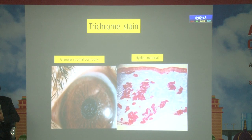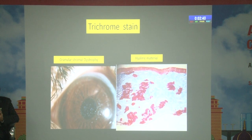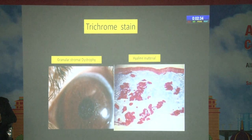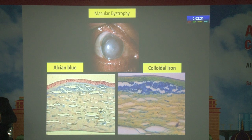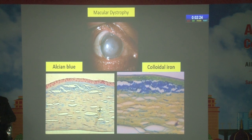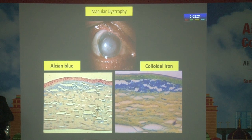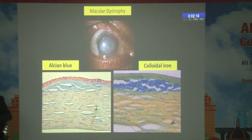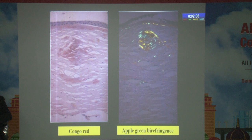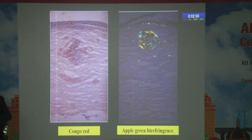With the trichrome stain, this is an example of granular corneal dystrophy — you can see the clear spaces in between the corneal opacity, and the hyaline material stains red on trichrome. In macular dystrophy, there is diffuse opacity with no clear spaces. Alcian blue shows acid mucopolysaccharide staining blue in color, as does colloidal iron staining in mucopolysaccharidosis. In lattice corneal dystrophy, the crisscross lattice lines are amyloid material, which stains positive with Congo red, and shows apple-green birefringence under polarized light.